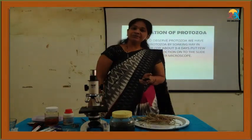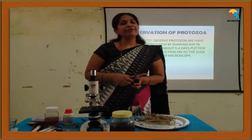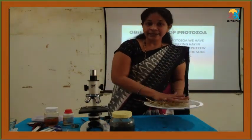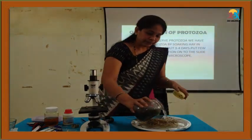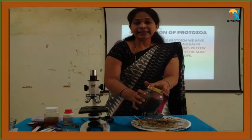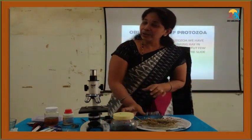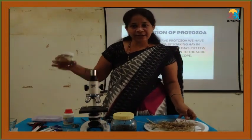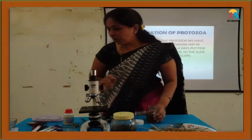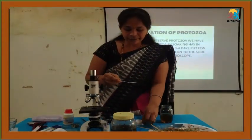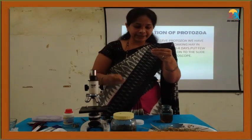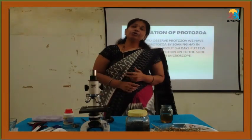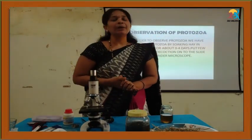Let us do an activity to observe protozoans. In order to observe protozoans, we first need to grow them. Take dry hay in a bowl, add pond water to it, and leave it aside for about three to four days. After three to four days, hay decoction will be formed. Take one or two drops of hay decoction onto a slide and observe it under the microscope. Children, draw the diagrams of those organisms you observed.